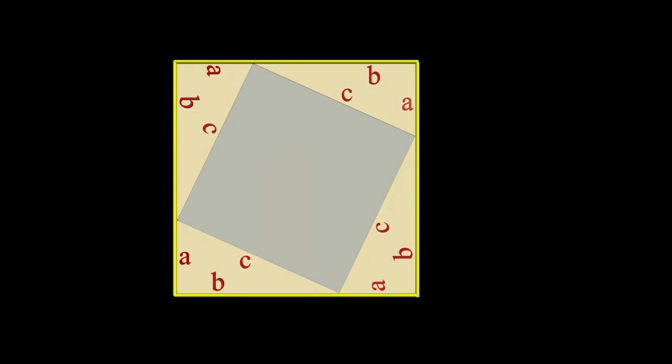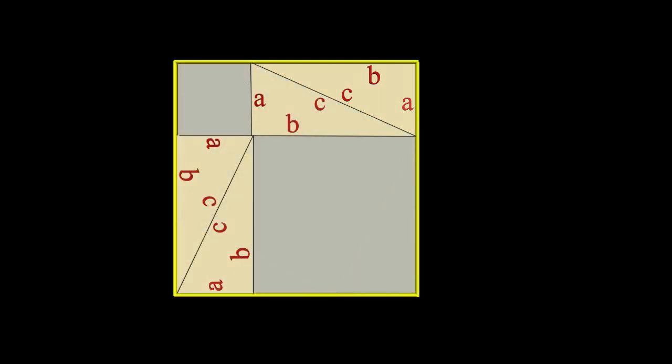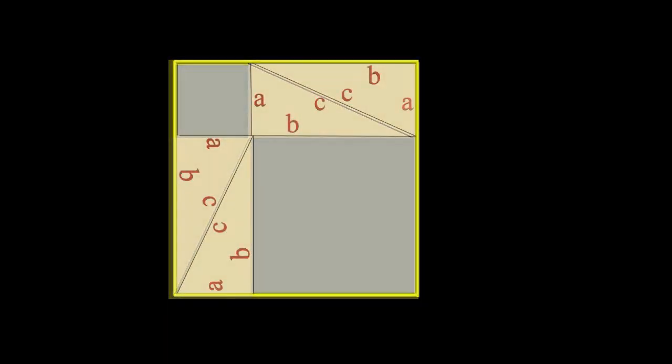Pythagoras then rearranged the four triangles inside the large square to create this. Now, the two new gray squares created by this rearrangement represent the area of the large square, not covered by the triangles.